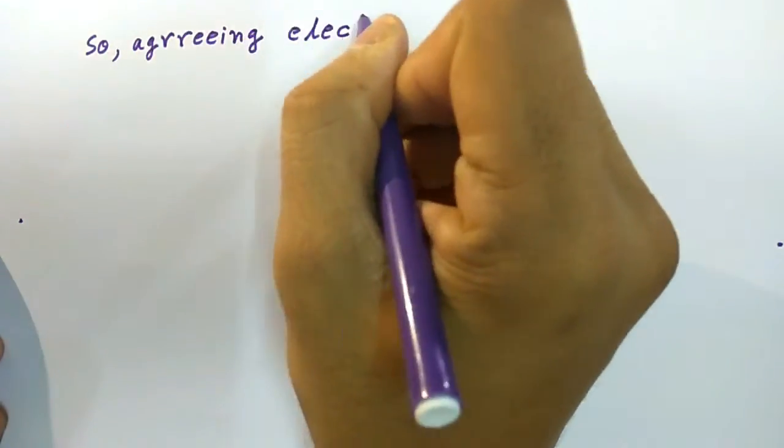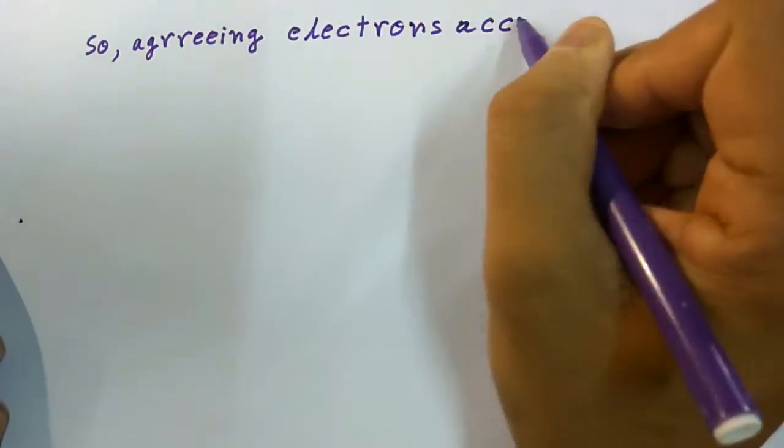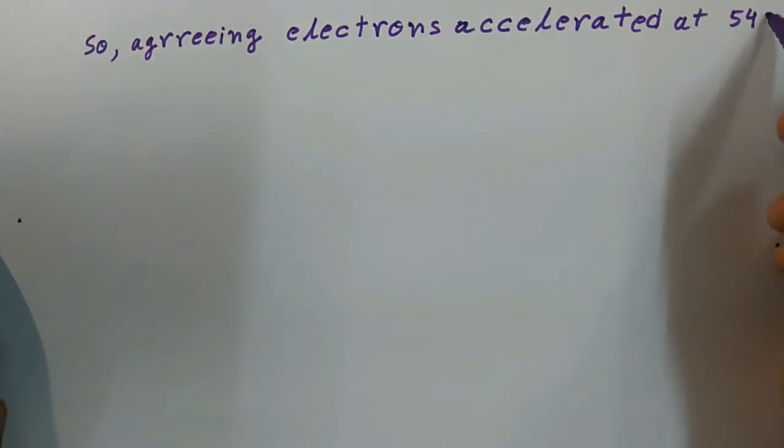So, agreeing electrons accelerated at 54-volt replicate x-rays, we have by Bragg's law, nλ is equal to 2d sin θ, where n is equal to 1 stands for a first order diffraction.